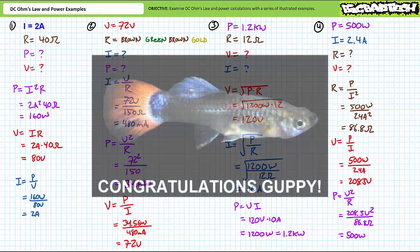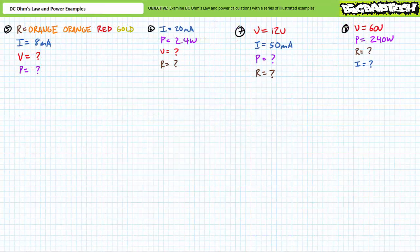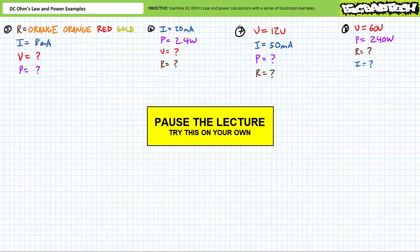Alright, if you made it through this first round without stumbling, I hereby promote you to the rank of guppy. Let's try the second set of example problems on for size. Given known values for each scenario, see if we can solve for the two unknown values using the most efficient and direct means possible. See if you can use another algebraic permutation of either DC Ohm's Law or the power equations to check your work. Ideally, both methods should yield the same result. Express all answers in proper engineering format to the tenths place. By all means, pause the lecture and try this on your own. If you're tracking, you should have obtained the following results.